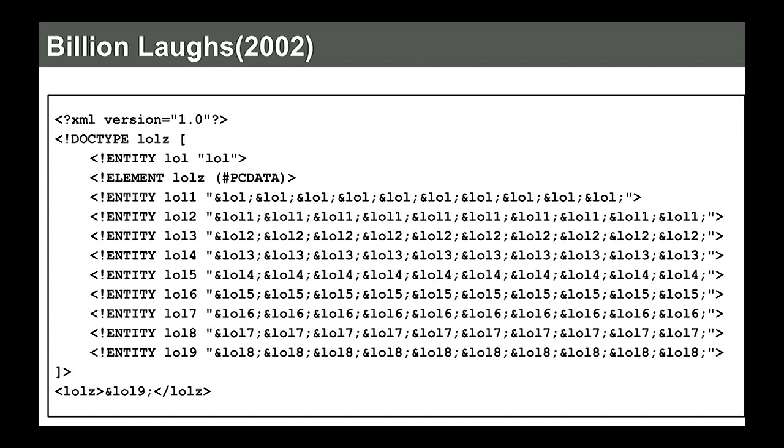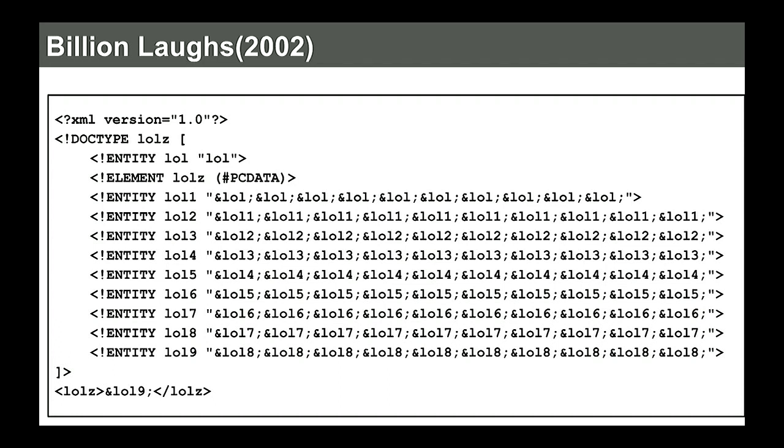That was an attack on a parser. Of course, you can relatively easily prevent this attack by just using a parser that uses dynamic programming. So instead of recomputing, let's say, LOL8 again and again, you just compute it once and then you cache it. So with dynamic programming, you can actually relatively easily solve this.